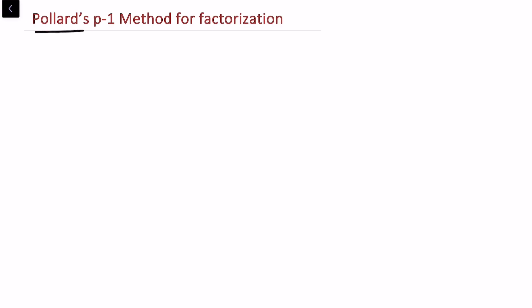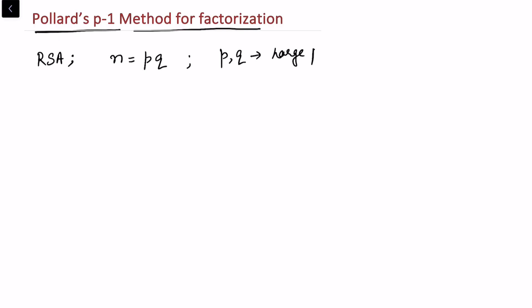In this video we'll be covering Pollard's p-1 method for factorization. Let us recall the basic setup of the RSA system: we require an integer n which is the product of two large primes p and q. We do not make p and q public but we keep n public. The question is how to factor n, and this problem is not easy — that is why the factorization problem plays an important role in cryptography.